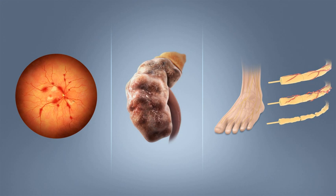The fastest prevalence increase is expected to occur in Asia and Africa, where most people with diabetes will probably live in 2030. The increase in rates in developing countries follows the trend of urbanization and lifestyle changes, including increasingly sedentary lifestyles, less physically demanding work, and the global nutrition transition, marked by increased intake of foods that are high energy-dense but nutrient-poor, often high in sugar and saturated fats, sometimes referred to as the Western-style diet. The global number of diabetes cases might increase by 48% between 2017 and 2045.